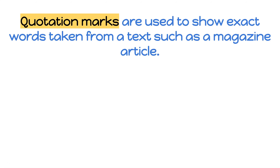Quotation marks are used to show exact words taken from a text, such as a magazine article or maybe any other book that you're reading. We use those articles or books that you're reading and refer to them as a source. And once again we'll use quotation marks to show the exact words taken from any written source.